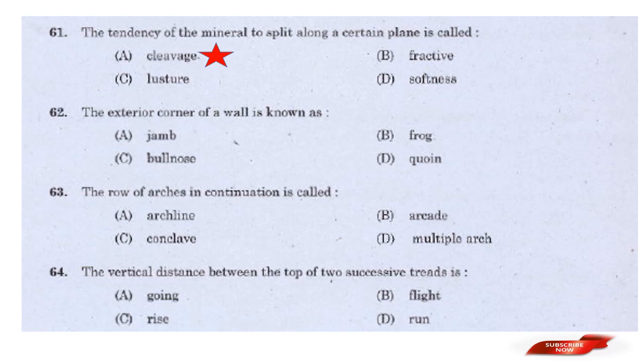Question: The exterior corner of a wall is known as — options: Jamb, Frog, Bullnose, Coin. Answer: Option D — Coin. The exterior corner of a wall is known as a Coin (Quoin).